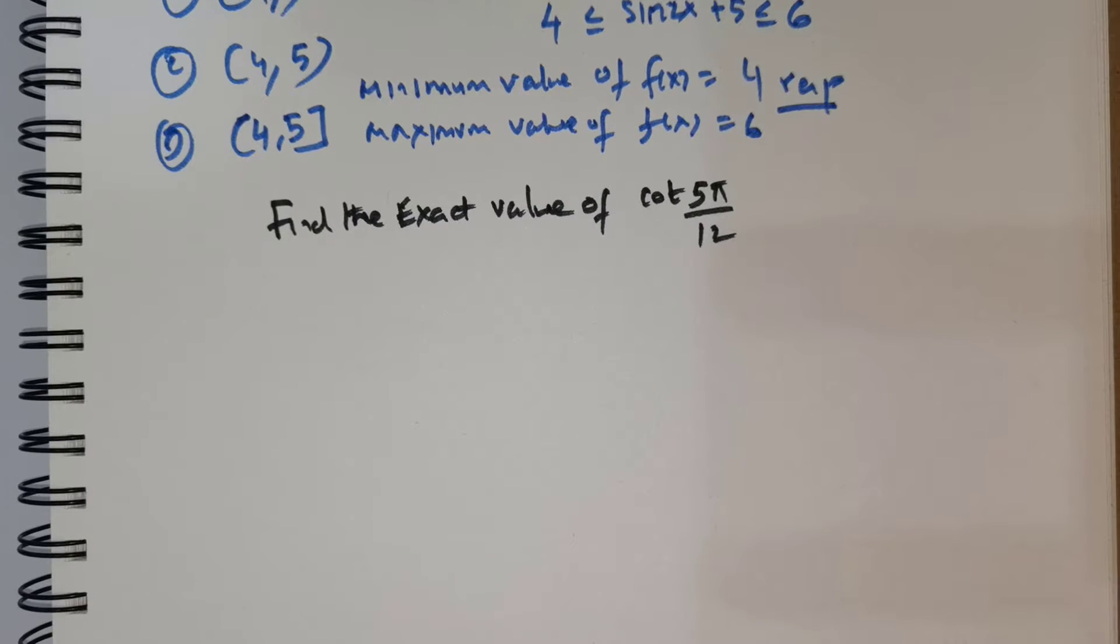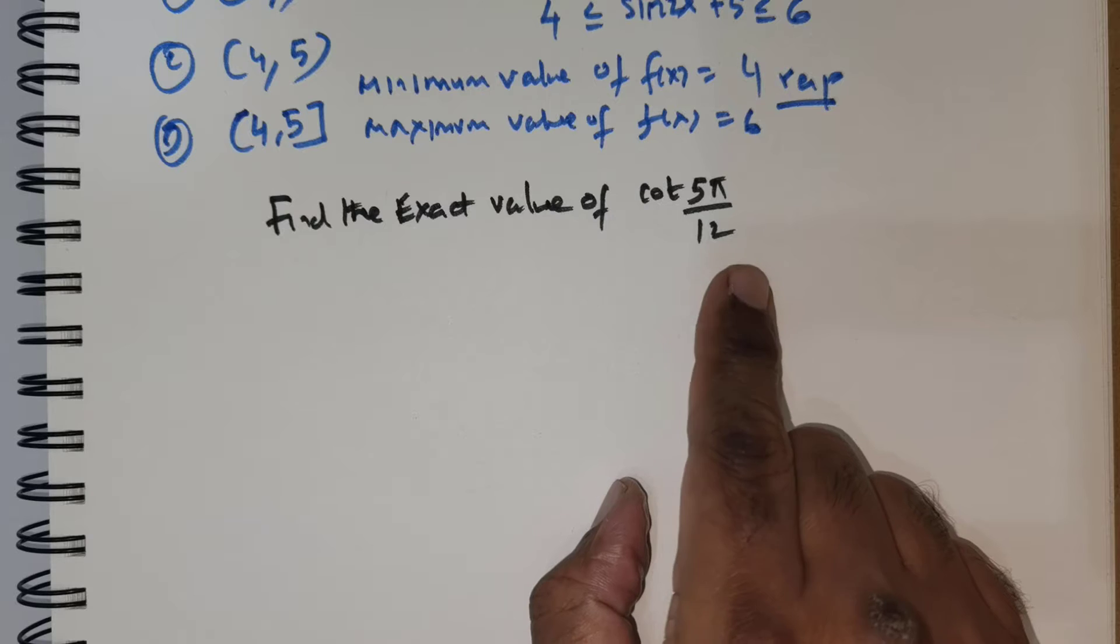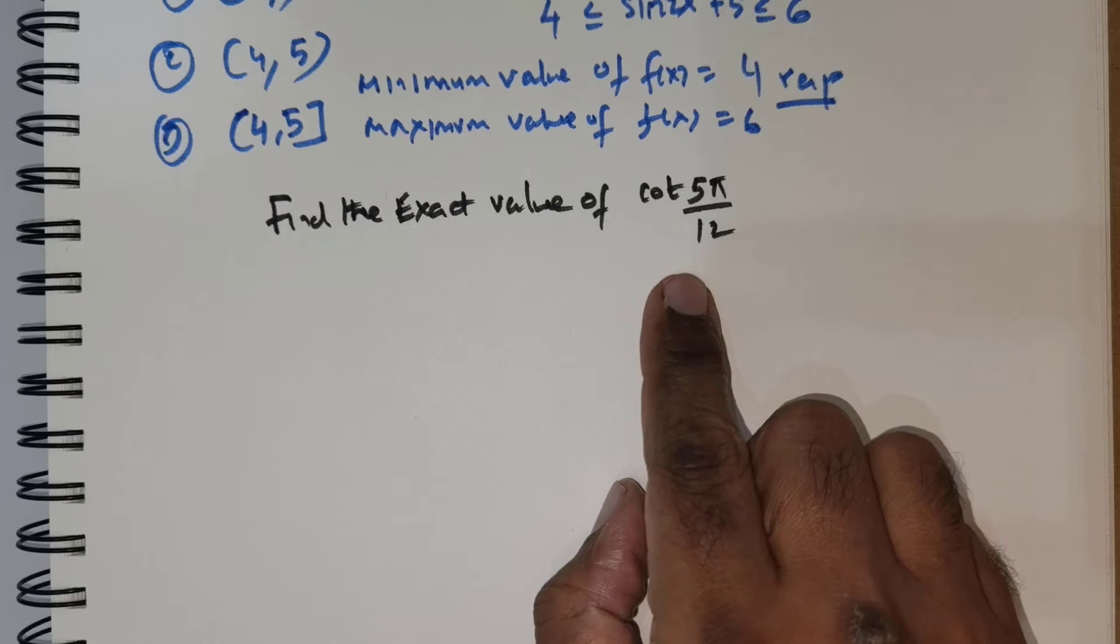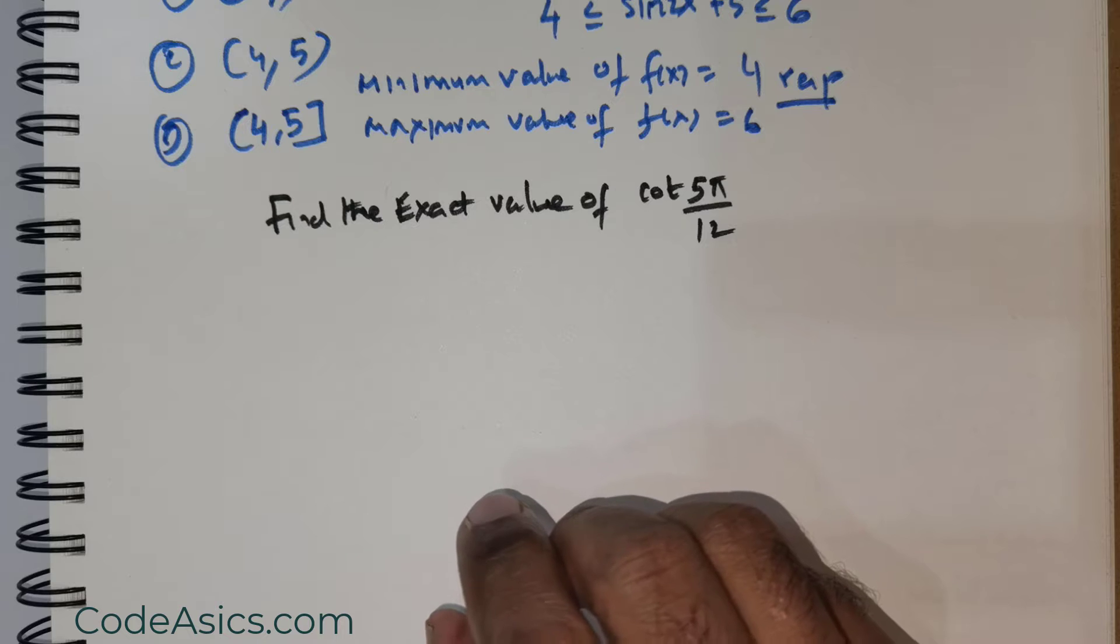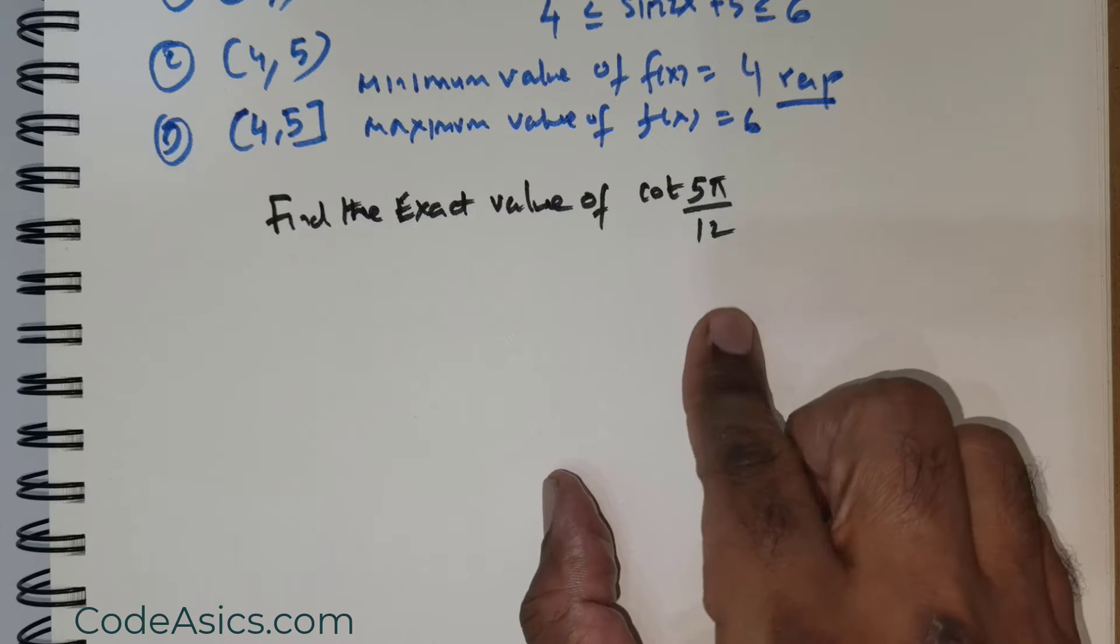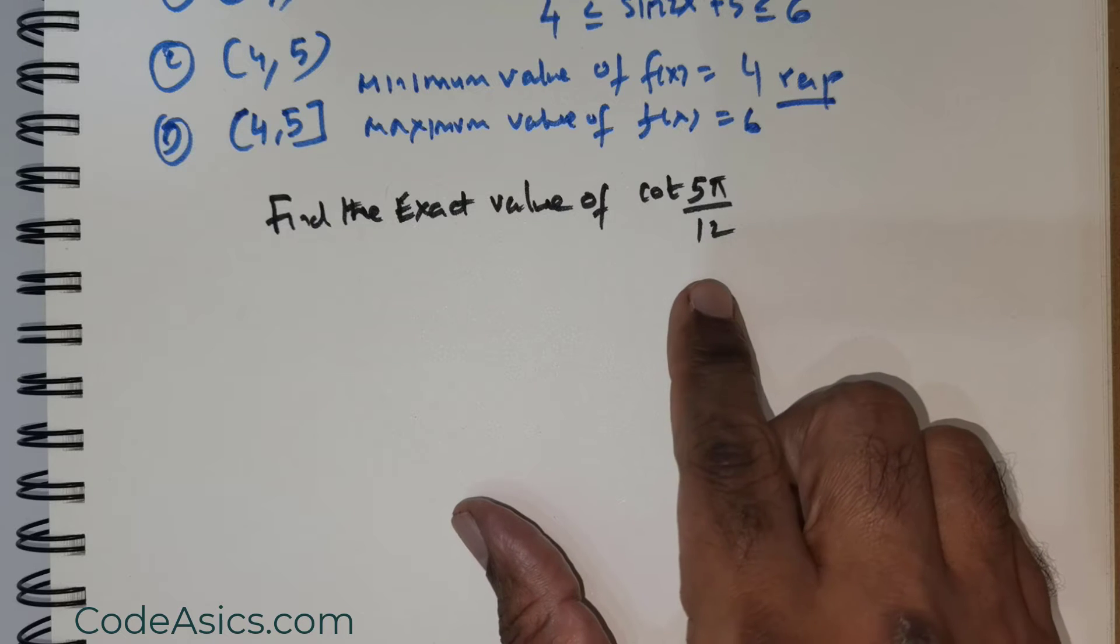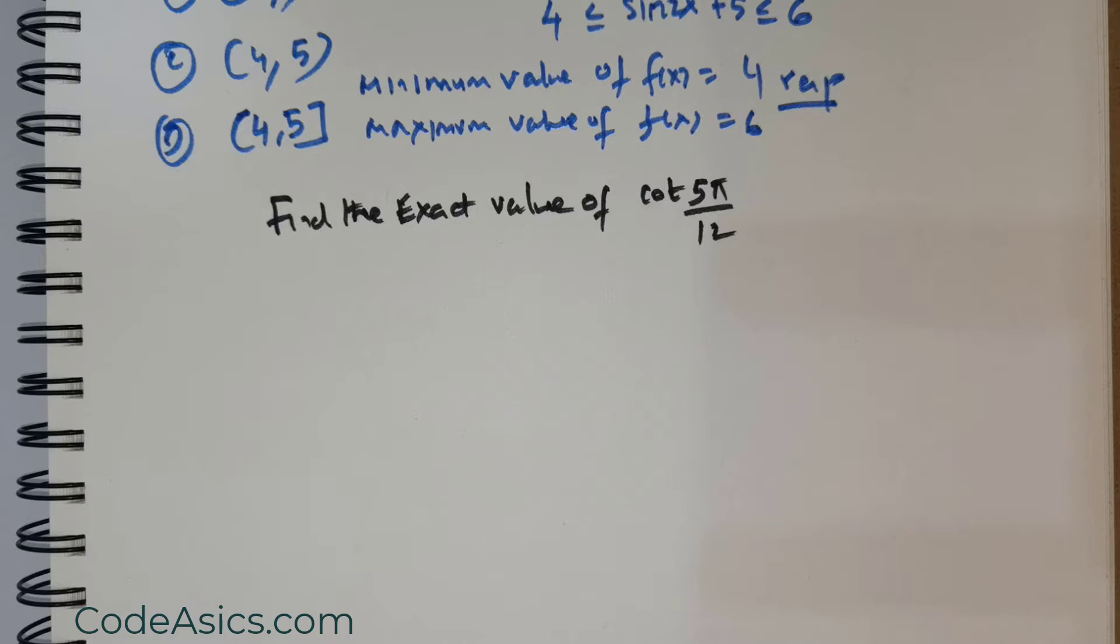Students, this is an interesting question: find the exact value of cot(5π/12). This is a little bit daunting if the student is unable to actually fragment this, but if he or she is well aware of the technique of fragmenting, then this is a simple question. Most people would find it a bit of a task to get it done, so it's imperative that you learn how.